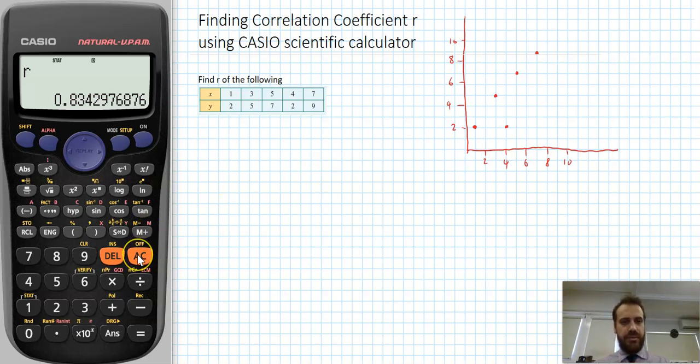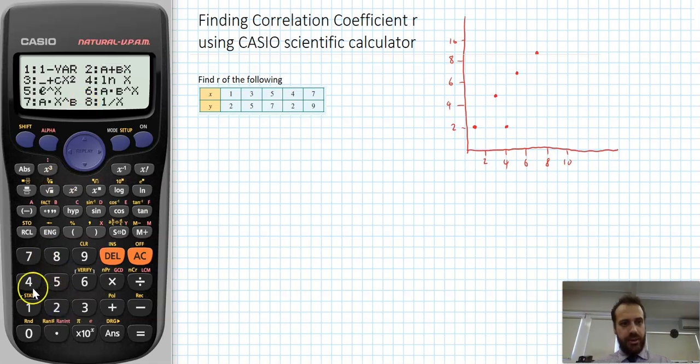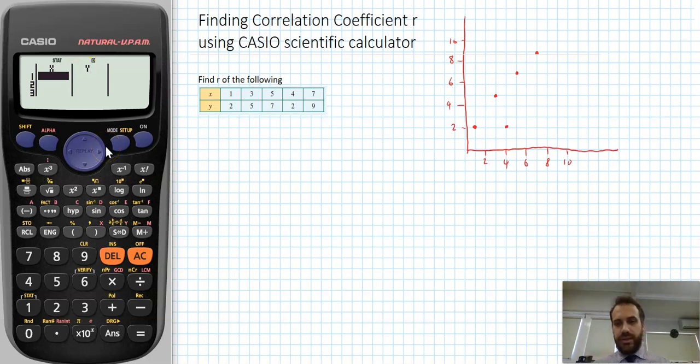Now, if I go back to the very beginning, if I press clear again, and go here to mode, and go back into stat mode, and go back into 2, you can see it's all cleared, and we can start again. If it wasn't cleared, you can just press delete, and you can delete all your options and keep going. All right, that's finding the correlation coefficient r using your Casio scientific calculator.